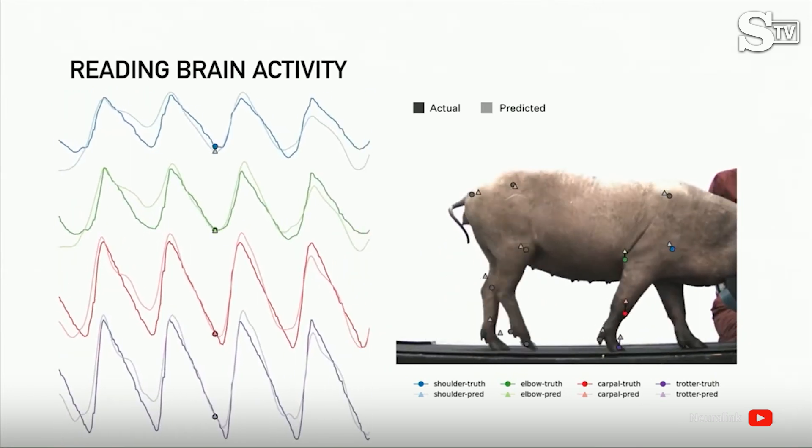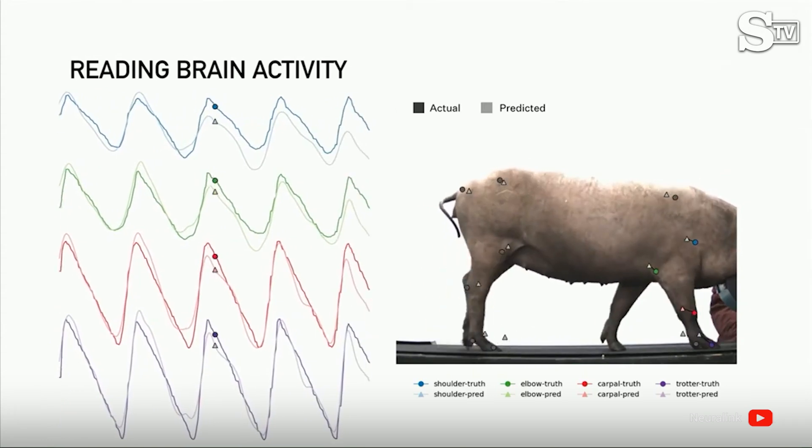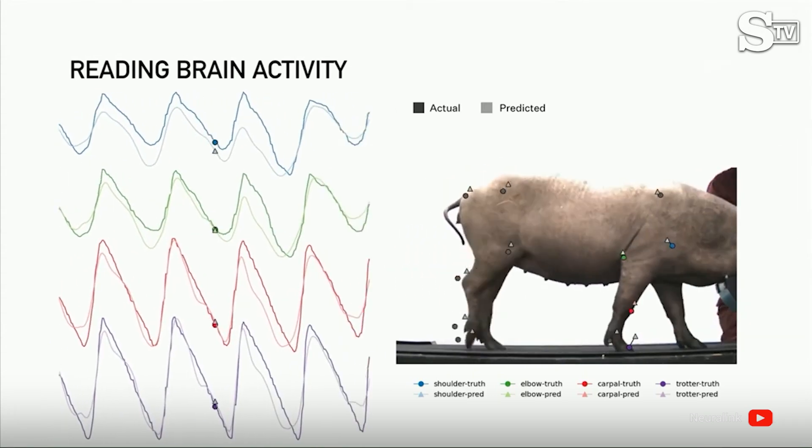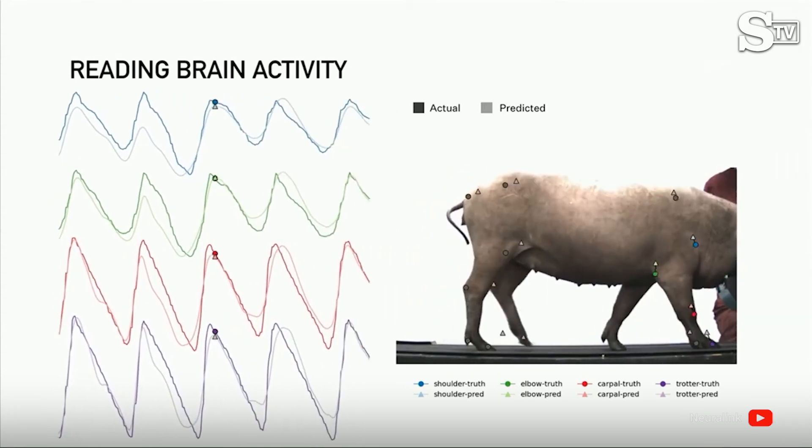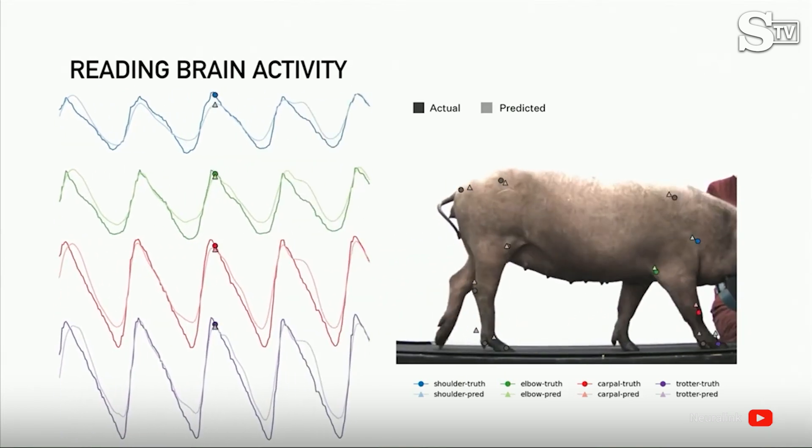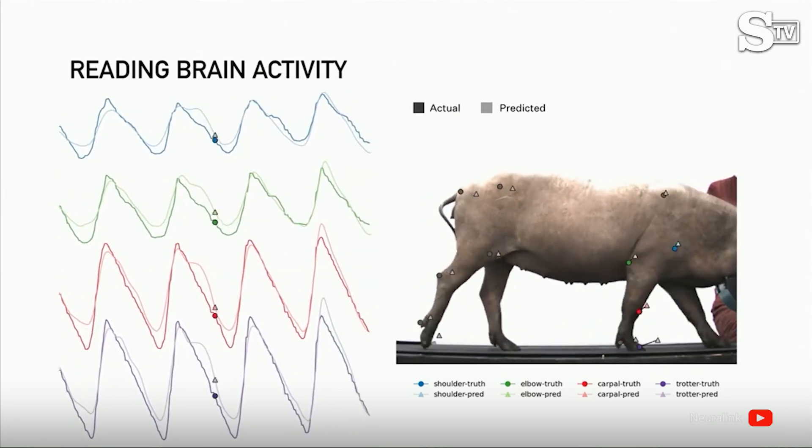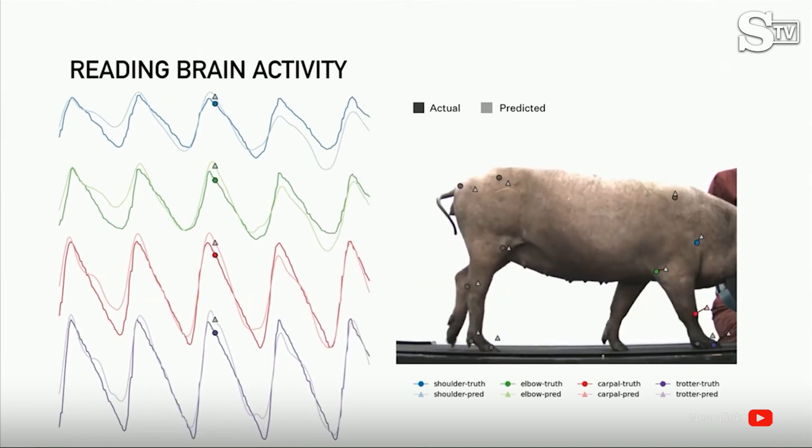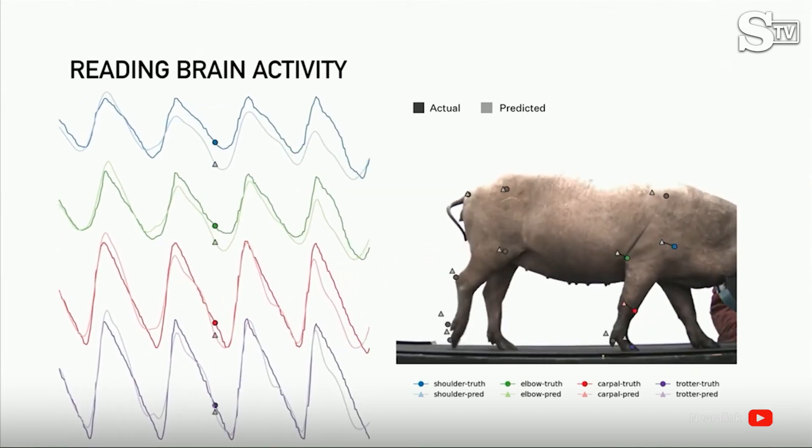And so we have the predicted position of the joints, and then we measure the actual position of the joints. You can see that they're almost exactly aligned. So we're able, with a wireless neural implant, to actually predict the position of all of the limbs in the pig's body with very high accuracy.